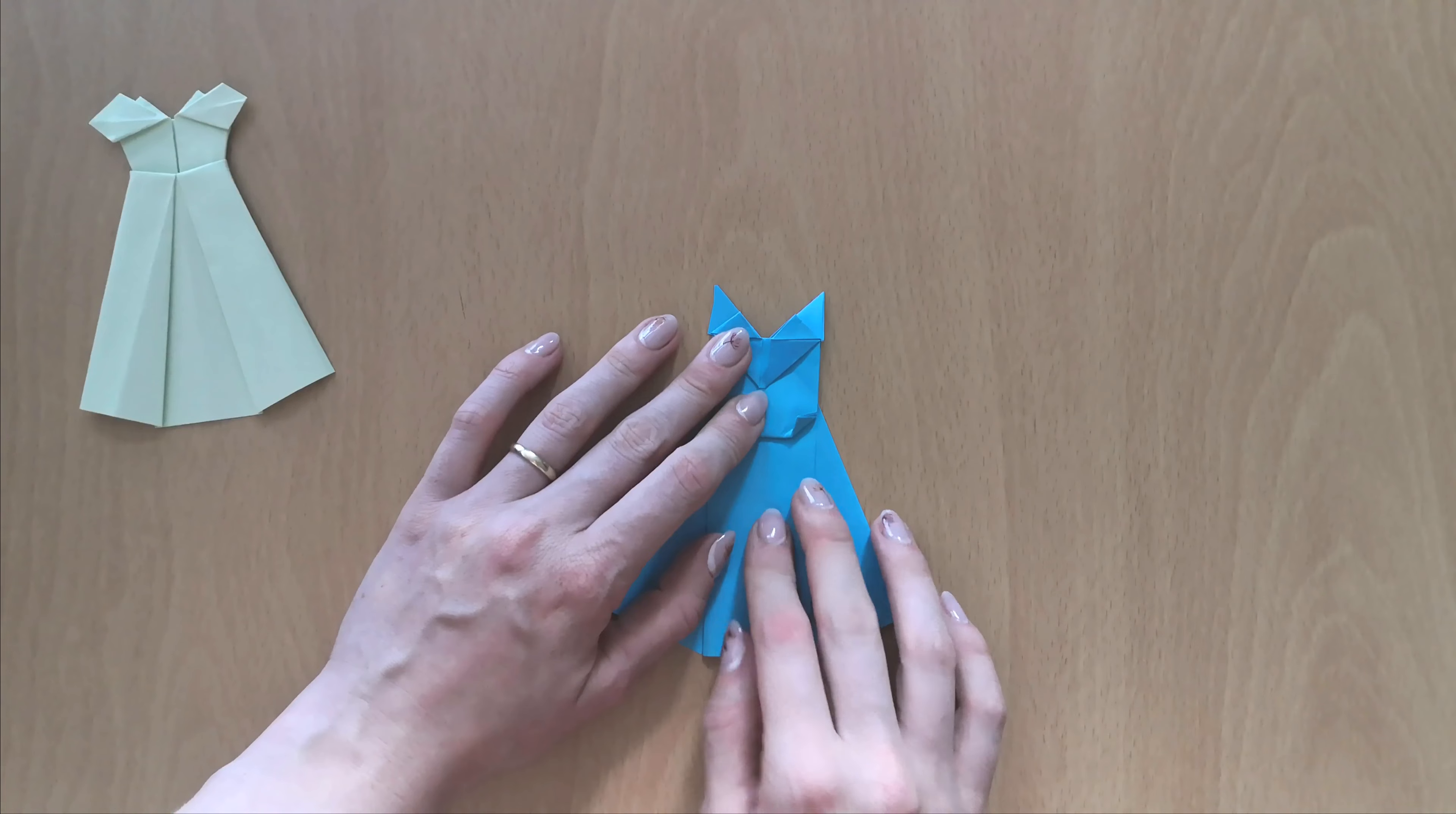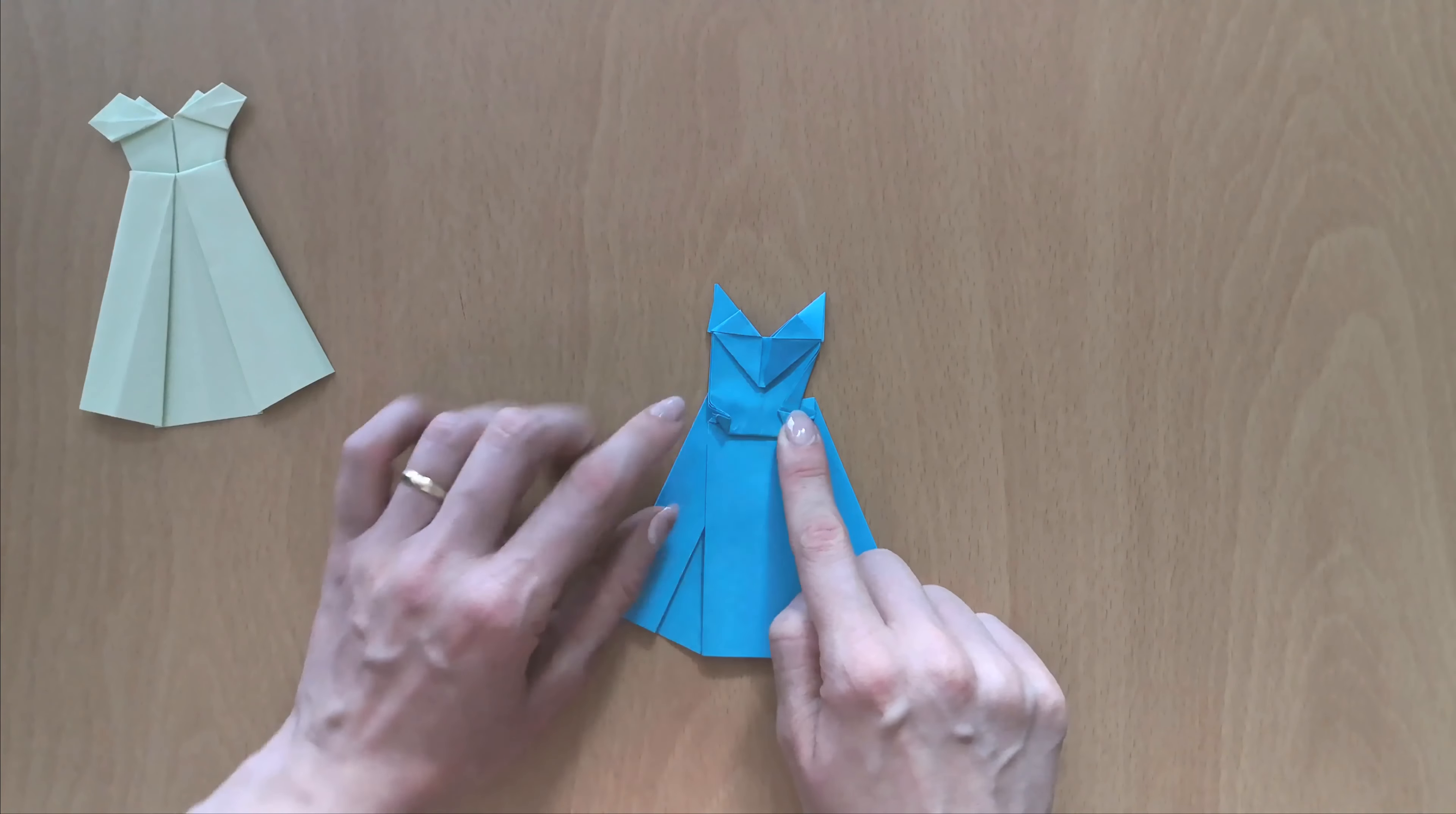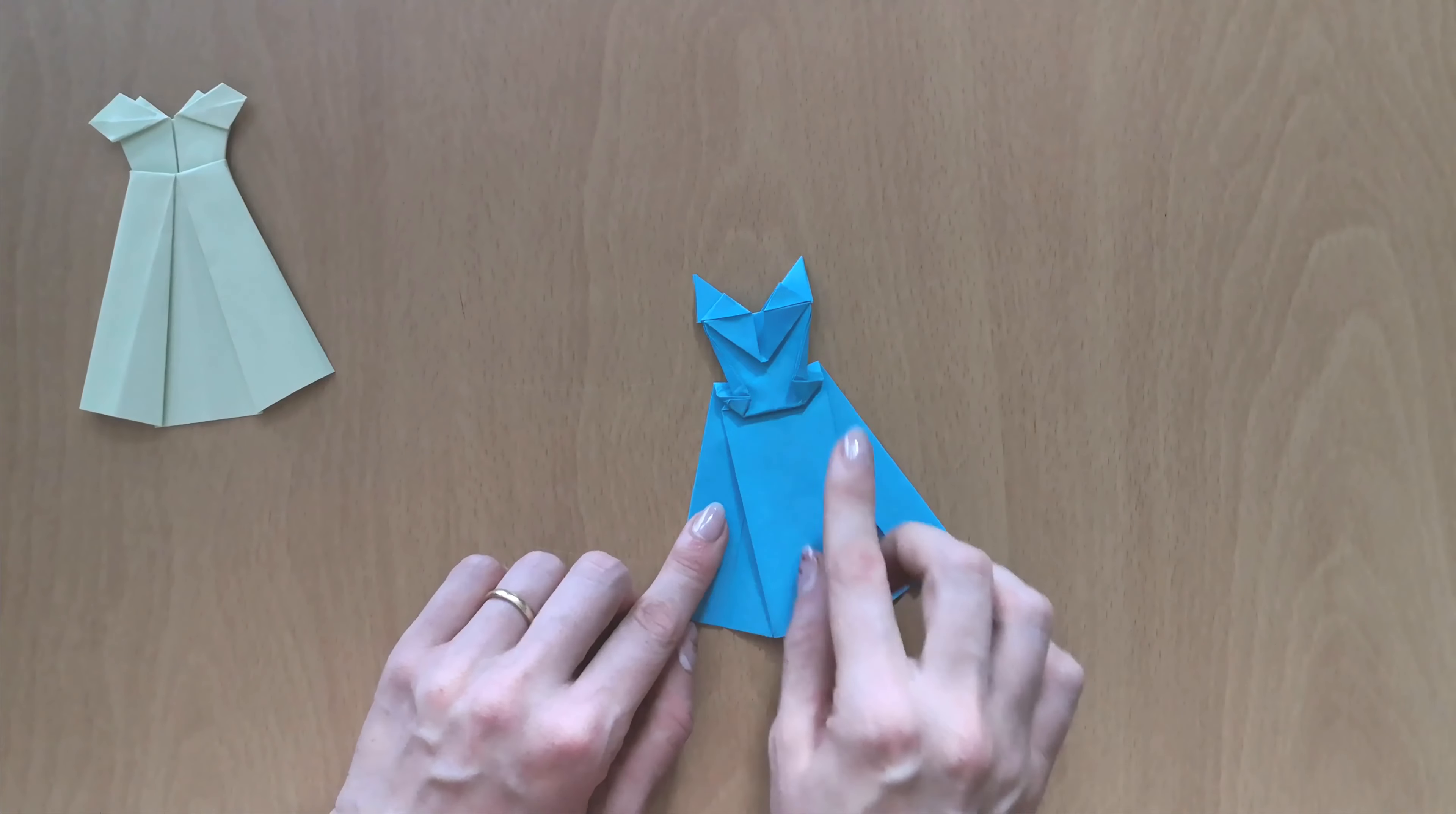Now you will open this triangle. Lift the upper layer of the paper and press the triangle down, so it goes from this corner in a straight line. Like so, the same with the other side. So unfold the triangle, lift the layer up, and open the triangle and press it down.